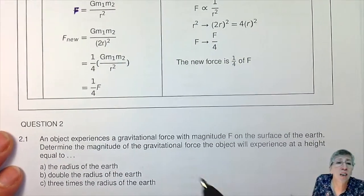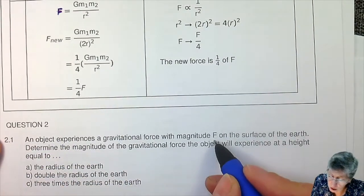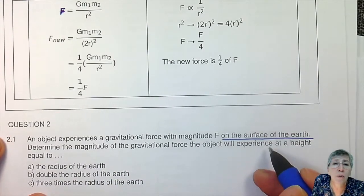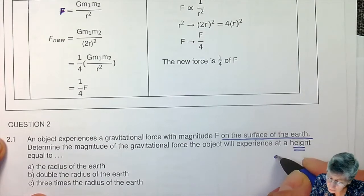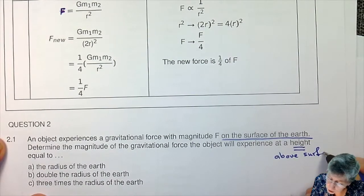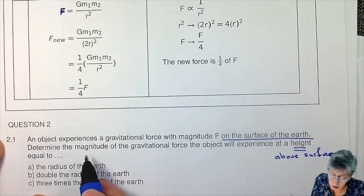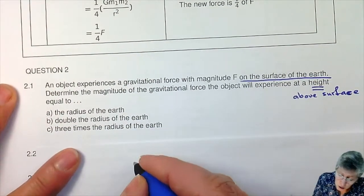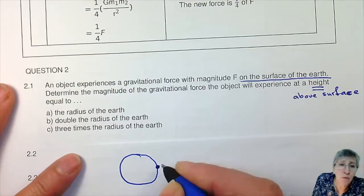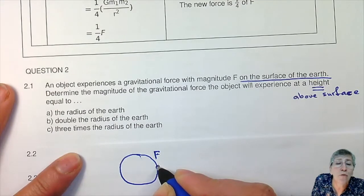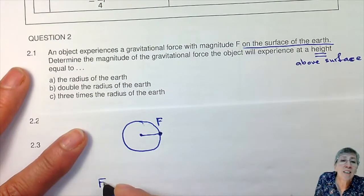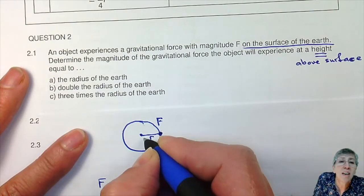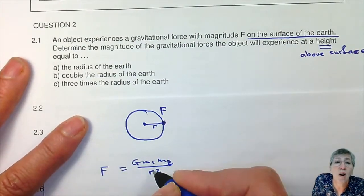Now let's move on to a few questions. An object experiences a gravitational force of magnitude F on the surface of the earth. Determine the gravitational force at a given height — remember, height means above the surface of the earth. When you've got the earth and the object is on the surface, the force F is calculated as G M1 M2 over R squared, where R is the radius of the earth because the centers are R from each other.